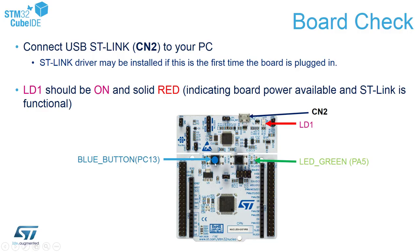The blue button is the so-called user button. It is connected to pin PC13. We will use it to test the external interrupts. The black button is a reset button which allows us to reset the complete application. On board we also have the green LED, located on the right side of the reset button. This green LED is connected to PA5, and we will use it to indicate some states of our application.